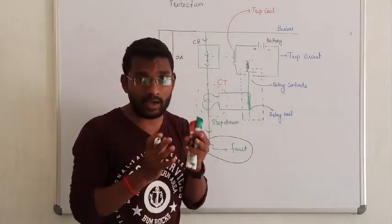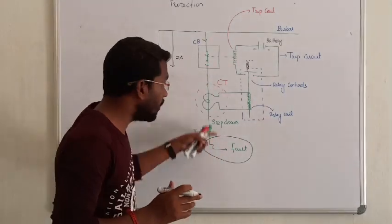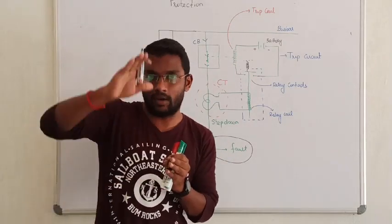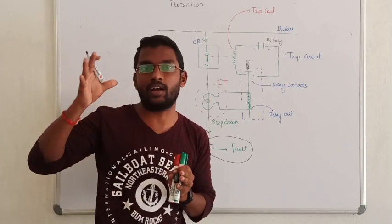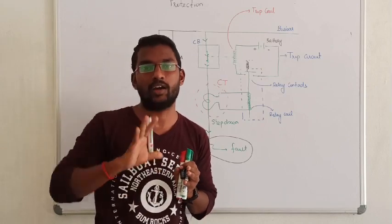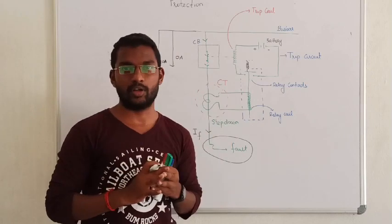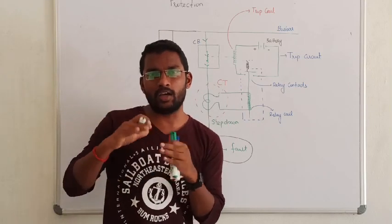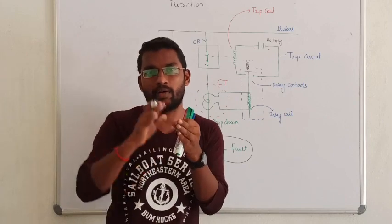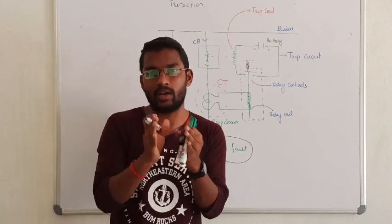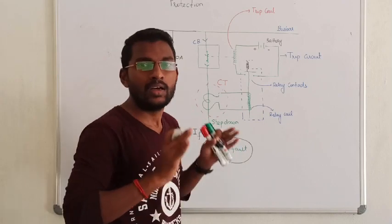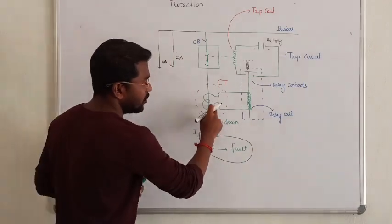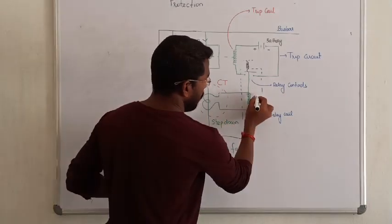If the line operating current is fixed, and the line of the operating current is fixed, then we analyze the fault. If the relay will detect a fault in the current, let the line of current be checked. If we are talking about the fault, we will do a relay transport.